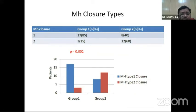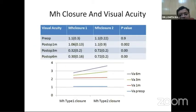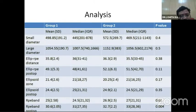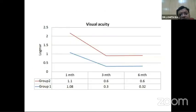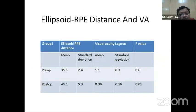Macular hole closure types: 17 type 1 closures were observed in group 1 and 2 type 2 closures, while in group 2, 8 were type 1 closure and 12 were type 2 closure. The comparison chart shows macular closure and visual acuity. For type 1 closure, post-op vision at 6 months showed a logMAR value of 0.3, which was statistically significant. Group 1 showed better visual acuity than group 2.